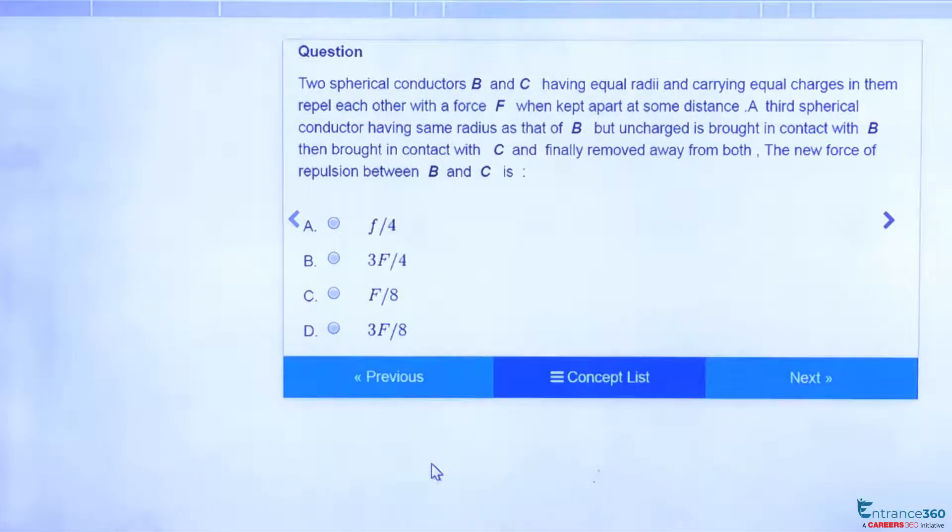Hello students. This is an interesting question from JMA in 2004 from chapter electrostatics. The question says we have two spherical conductors B and C having equal charges and radius, and the force of repulsion between them is F.